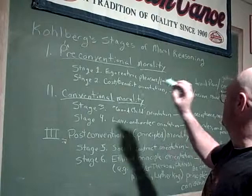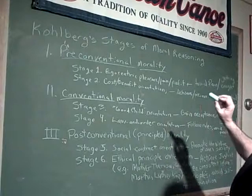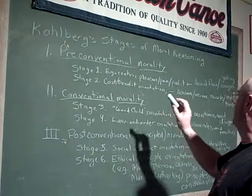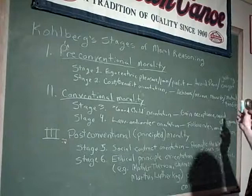Pre-conventional morality, stage 1: egocentric pleasure, pain, profit — which is avoiding pain and avoiding getting caught. Stage 2: cost-benefit orientation — achieve rewards, receive mutual benefits.